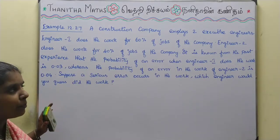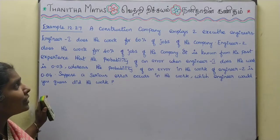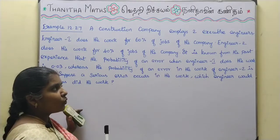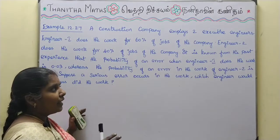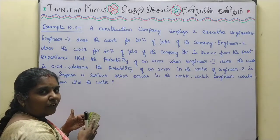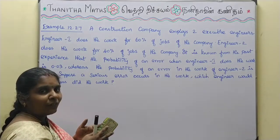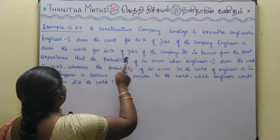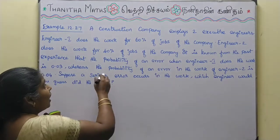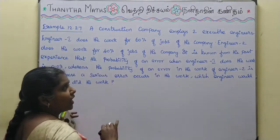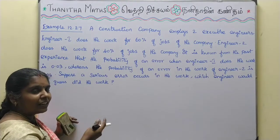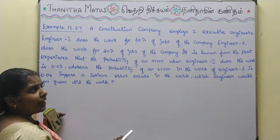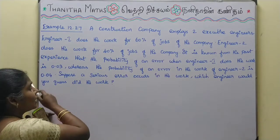If you have a construction company with two executive engineers, Engineer 1 does the work for 60% of jobs and Engineer 2 does the work for 40% of jobs. It is known from past experience that the probability of an error when Engineer 1 does the work is 0.03, that is 3 percent.